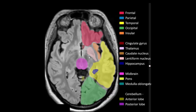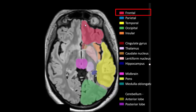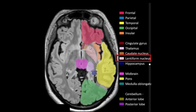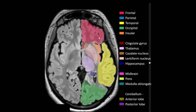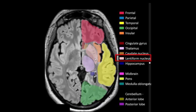Cerebellum. Occipital lobe, midbrain, hippocampus, thalamus, lentiform nucleus, insular cortex, head of caudate nucleus, cingulate gyrus. Cingulate gyrus, cerebellum, head of caudate nucleus.